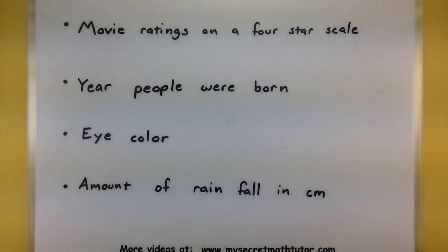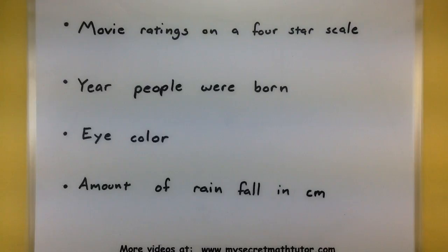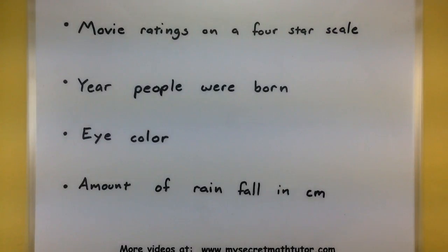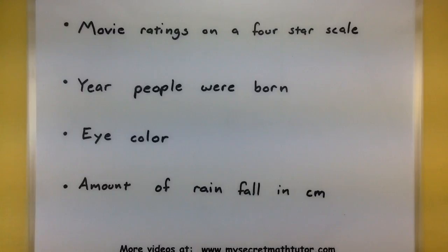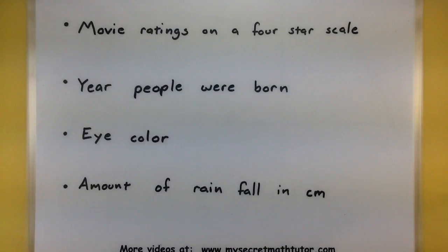Here are some different situations of data I might be collecting. For the first, I'm collecting movie ratings on a four-star scale. Some movies are one star, some are four stars. Can I order the data? The answer is yes — I can have all my one-star movies, followed by two-star, three-star, and four-star movies. In that order, it really signifies my bad movies and my good movies. So an ordering in this sense matters.